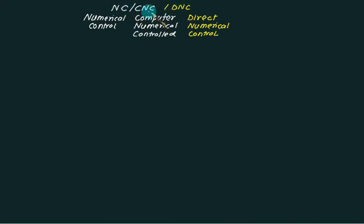So, we have NC, CNC or DNC. NC stands for Numerical, CNC stands for Computer Numerical Control and DNC called as Direct Numerical Control.